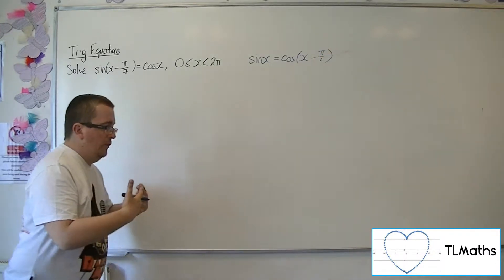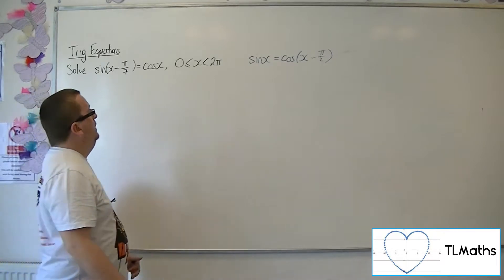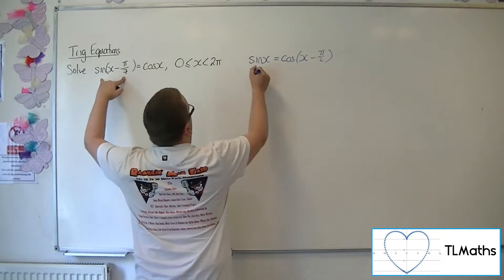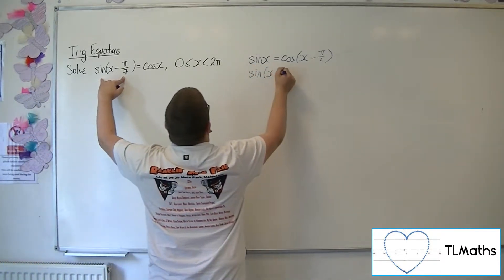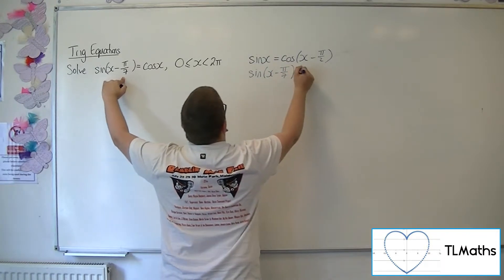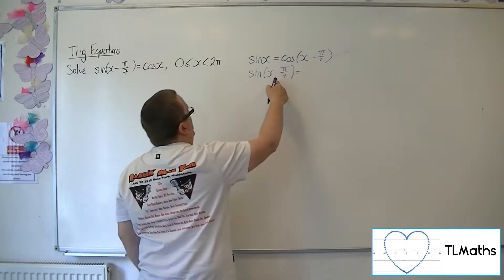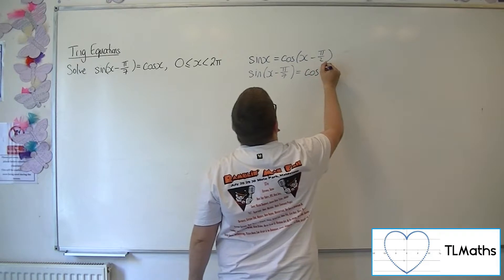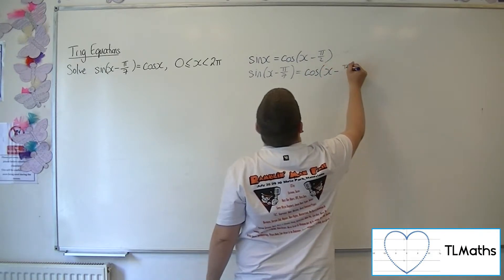x minus pi over 2 to move it to the right. So if I've got sine of x minus pi over 7, replacing the x there with x minus pi over 7, I replace the x here with x minus pi over 7.